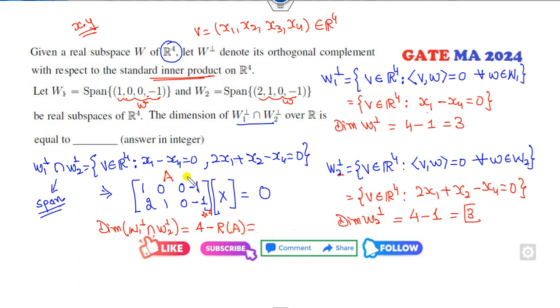So if I call this A, AX = 0. What is the rank of this matrix? Rank of this matrix is 2 because you can get a 2×2 minor. So that means 2 is the right answer of this problem.